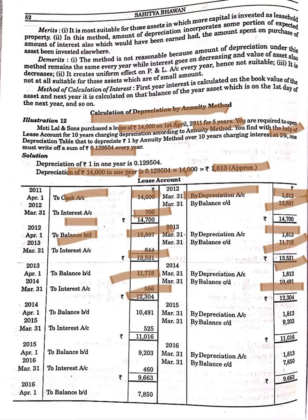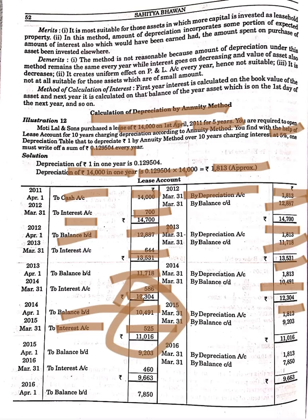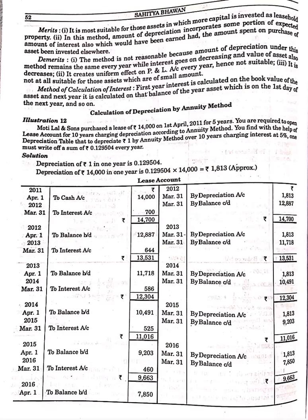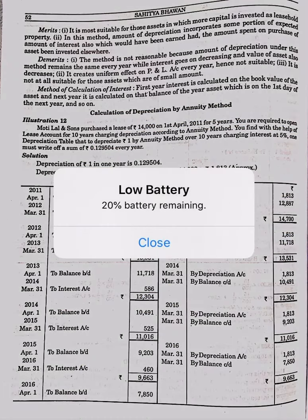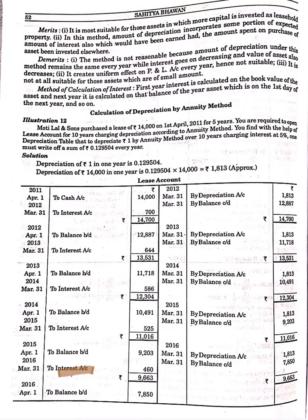This balance is carried down and brought down as 10,491. Interest on 10,491 at 5% is Rs. 525. Depreciation remains 1,813. Adding interest and subtracting depreciation gives a balance of 9,203. Then interest is charged on 9,203 at 5%, giving Rs. 460. Depreciation is 1,813. After adjustment the balance comes to 7,850.